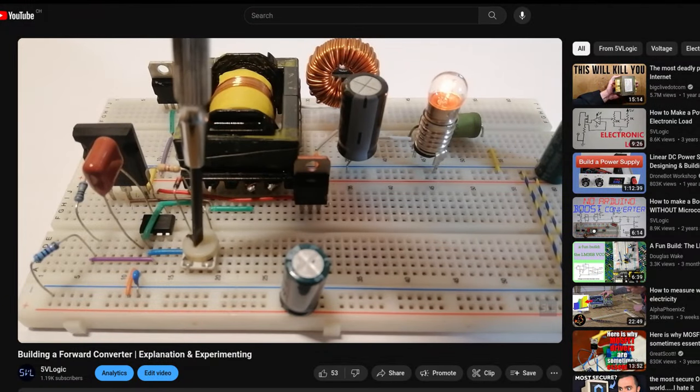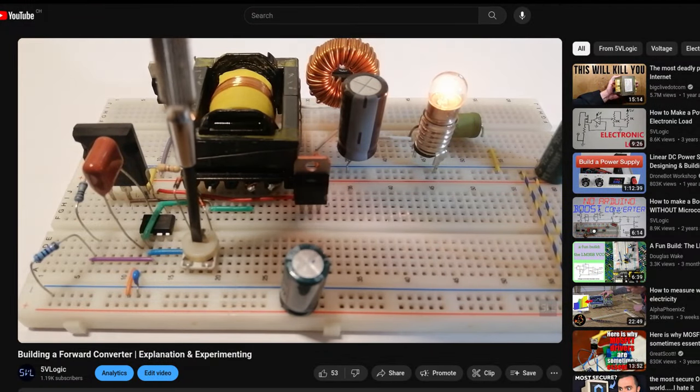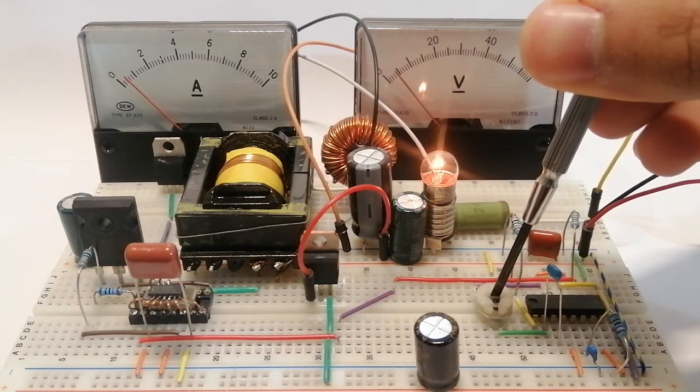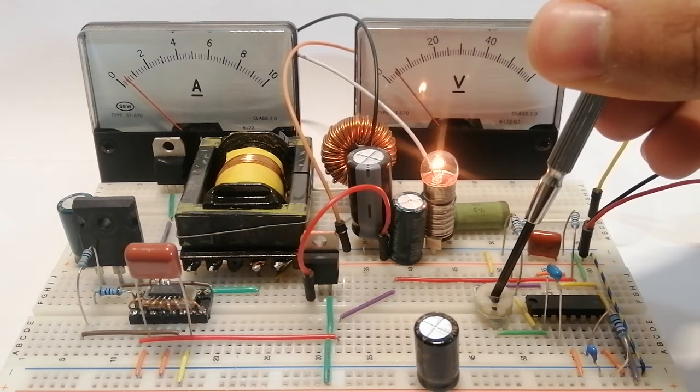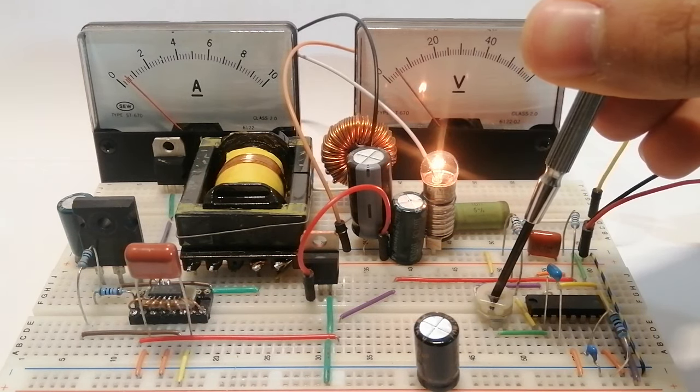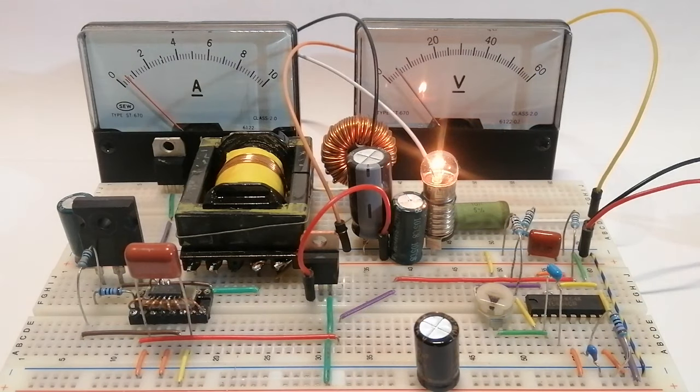So in the last video I built a forward converter and experimented with it a little bit. In this video I want to control the output because the way it worked in the last video was just that I could change the duty cycle and by drawing more or less current the voltage would vary.